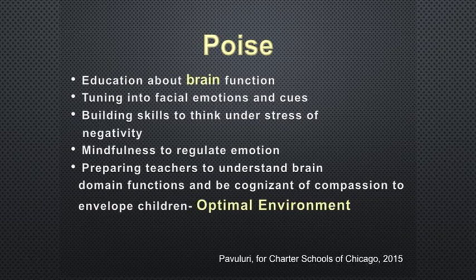As a result, we developed POISE and mindfulness as treatment. I am taking this affect regulation module to Chicago charter schools — we call it Amazing Start in Chicago. I wrote the curriculum for the classes because teachers are all stressed out. We're educating kids about the brain and tuning them into facial emotions. We're building skills to think under the stress of negativity — cognitive restructuring — and teaching them mindfulness to regulate emotions. We're also preparing teachers to understand the brain. The environment and the people have to wrap around these children, be affectionate, tolerate their idiosyncrasies, understand their emotional systems. It's very important to teach teachers to understand brain functions and compassionately envelop the children.